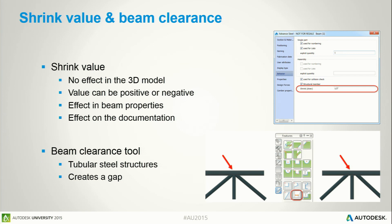Just a few words about additional possibilities in Advanced Steel. Sometimes in your project you need to fabricate a beam or member a little bit shorter or longer than the theoretical value. We have a possibility in Advanced Steel to assign what we call a shrink value. This value can be positive or negative — positive will shorten the beam, negative will extend it. It has no effect in the model, but the value will be taken into consideration for drawings, bill of material, and NC files.